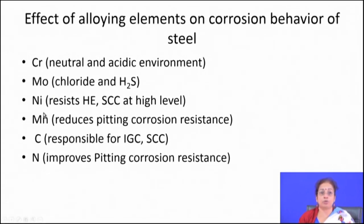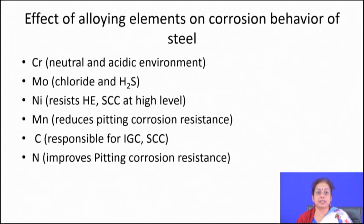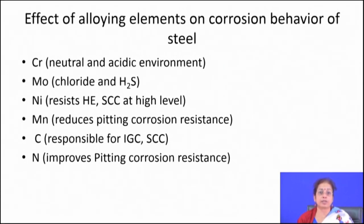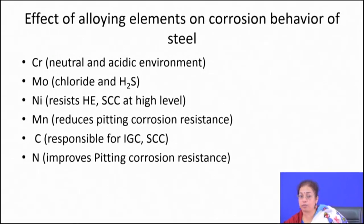Alloying is also used to reduce corrosion tendency. Chromium protects in neutral and acidic environments; molybdenum protects in chloride and sulfuric acid environments; nickel resists stress corrosion cracking at higher levels; manganese reduces pitting corrosion resistance; molybdenum enhances pitting corrosion resistance; carbon is responsible for intergranular corrosion and stress corrosion cracking; nitrogen improves pitting resistance. These guidelines on the role of alloying elements must be known prior to designing an alloy for a specific application.